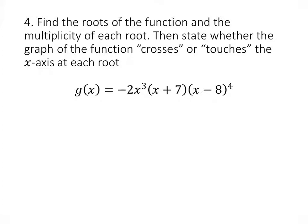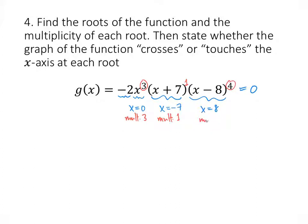Same type of question — finding roots, multiplicities, and touch versus cross behavior. Setting the function equal to 0: negative 2 can't be 0; x cubed gives root x equals 0; x plus 7 gives root x equals negative 7; x minus 8 gives root x equals 8. The multiplicity of root 0 is 3 (odd — graph crosses). The multiplicity of root negative 7 is 1 (odd — graph crosses). The multiplicity of root 8 is 4 (even — graph touches the x-axis).